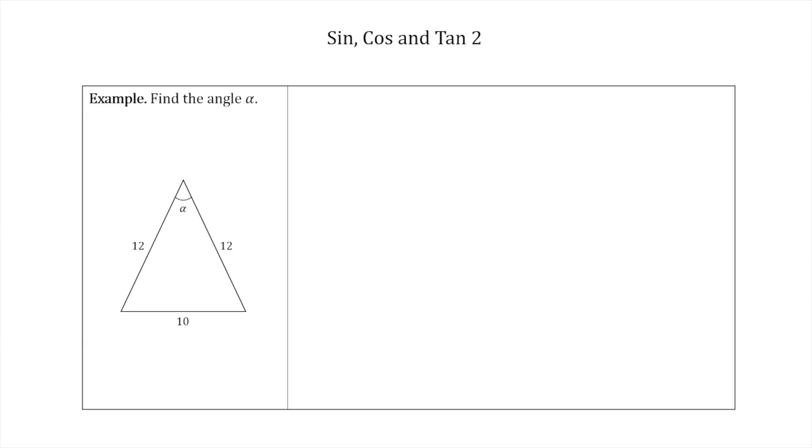We're going to solve this problem: Find the angle alpha in this triangle. We've got an isosceles triangle, which means that two of the sides are the same length. You can see there's two sides that are length 12 and then the base is length 10. We want to find this angle alpha.